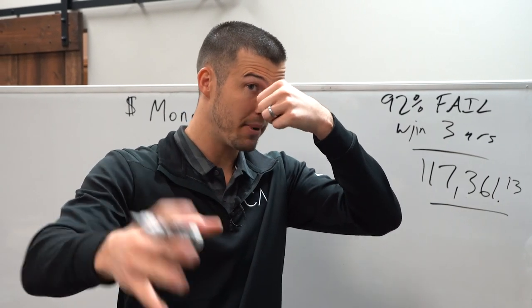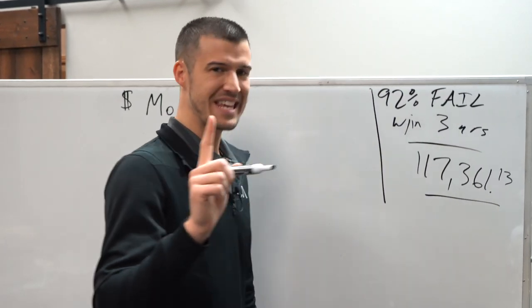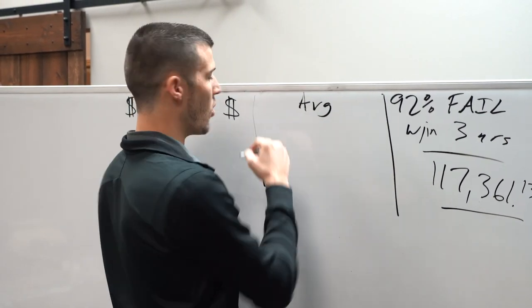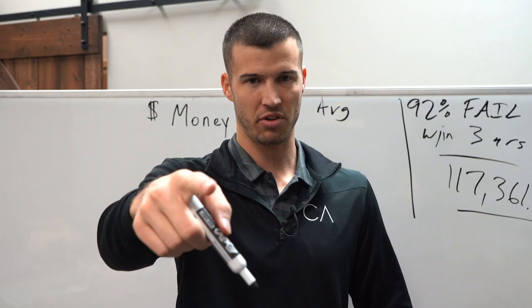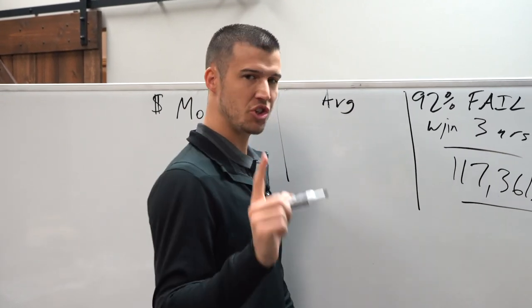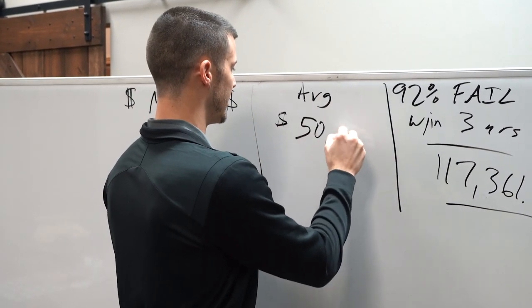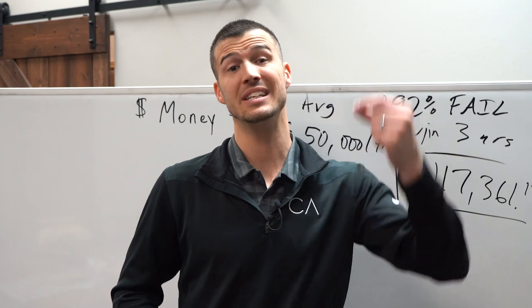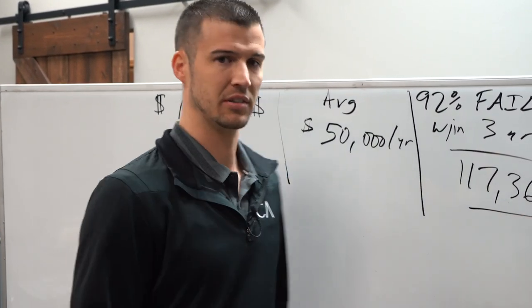92% fail within three years. Awful statistic. We created 8% Nation because of that. That's the Insurance Wealth Conference where we get agents like you together every single year. We're going to Vegas this next year. How much money can you make though as an agent? The average insurance agent makes about $50,000 per year. Some states, some areas, some different product types, it's higher, some it's lower. About $50,000. That sucks, right? That's horrible.